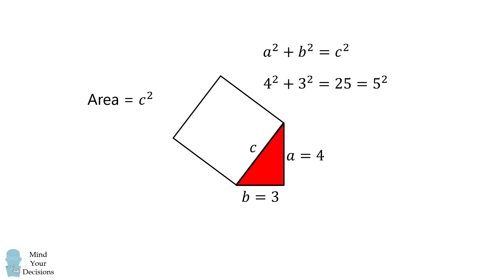We want to solve for the area of the square, which is exactly equal to c squared. This means the area of a single square is equal to 25. And that's the answer.